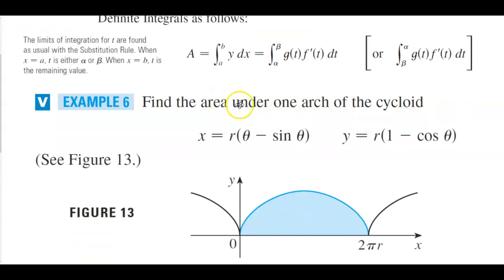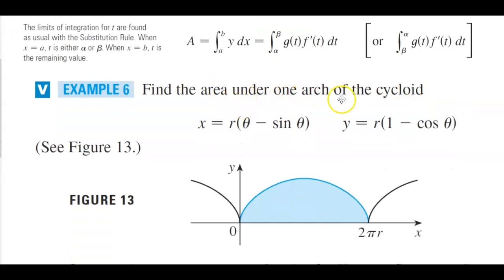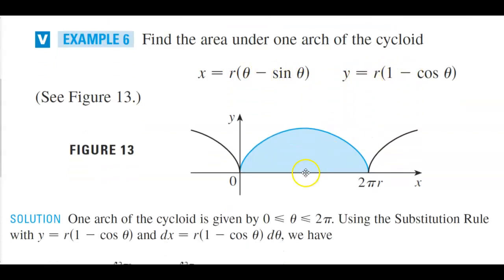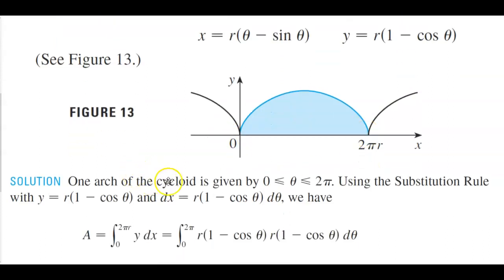Now we want to find the area under one arch of the cycloid. Graphing the parametric equations x = r(theta minus sin theta) and y = r(1 minus cos theta), one arch of the cycloid goes from zero to two pi. So theta is between zero and two pi.